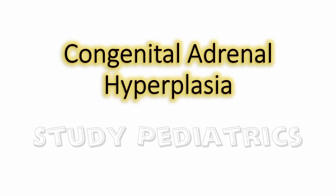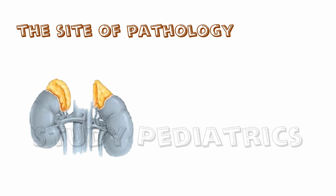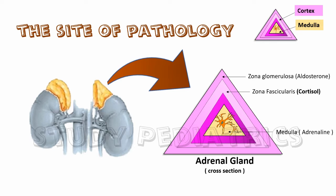Congenital Adrenal Hyperplasia: A Cortisol Deficient Syndrome. Let's see the site of pathology first. As we know, adrenals are two small organs placed over kidneys. Taking a cross section, we can see the two main parts: medulla and the cortex. Medulla secretes neurotransmitter hormone, i.e., adrenaline, whereas cortex is subdivided into zona glomerulosa for aldosterone, zona fascicularis for cortisol, and zona reticularis which secretes sex hormones such as testosterone and estrogen, both in males and females.